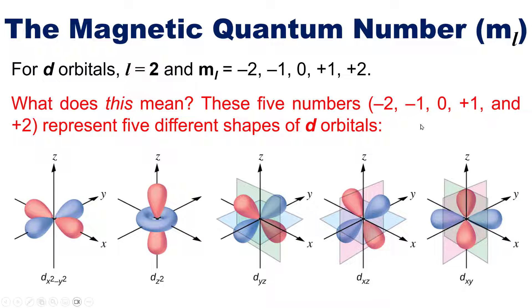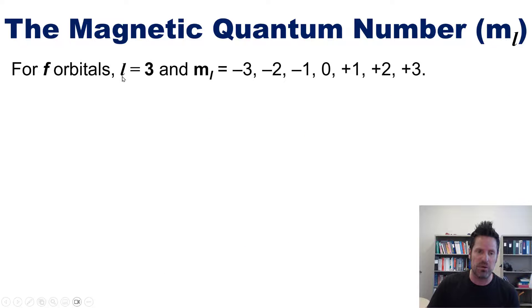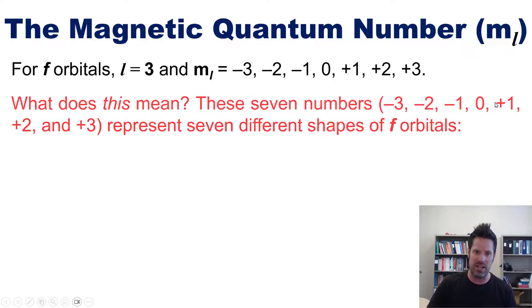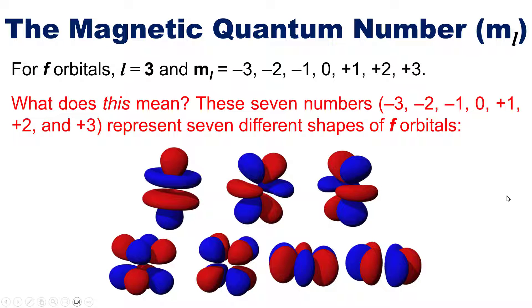What about the F orbitals? For F, your l number is equal to 3, so your possible m sub l values are all of the numbers right here. These seven numbers—negative 3, negative 2, negative 1, 0, plus 1, plus 2, or plus 3—represent the seven different shapes of F orbitals.